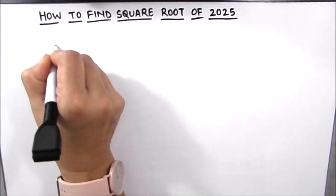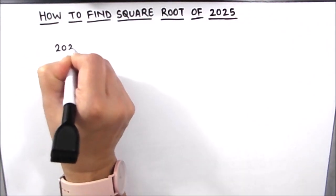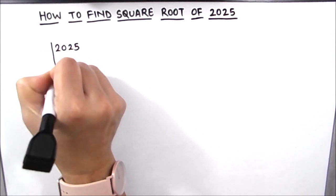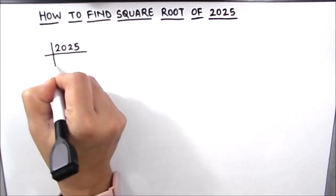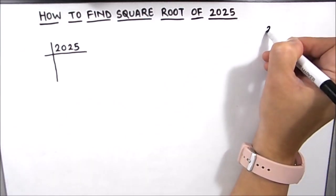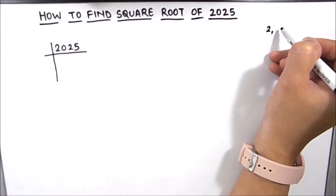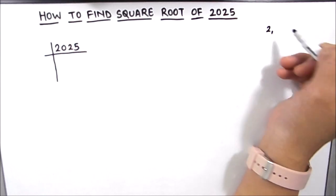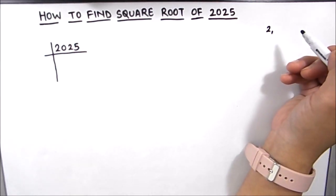So let's start by dividing the number 2025 by prime numbers. Prime numbers are numbers which are divisible by number one and the number itself. I am going to write the first few prime numbers here on the side of the board so that it is easy for us in our prime factorization method.